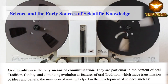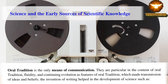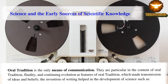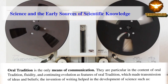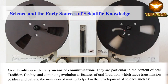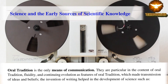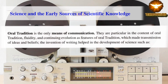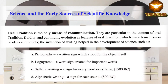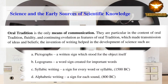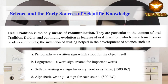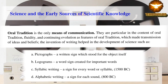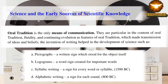Oral tradition is the human means of communication. Particular features of oral tradition include fluidity and continuing evolution, which enabled the transmission of ideas and beliefs. The invention of writing helped in the development of signs such as: pictographs, a written sign which stood for the object itself; logograms, a word sign created for important words; syllabic writing, a sign for every word or syllable; and alphabetic writing, a sign for each sound.